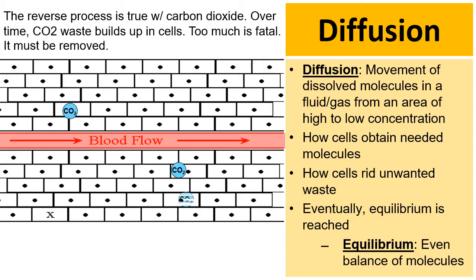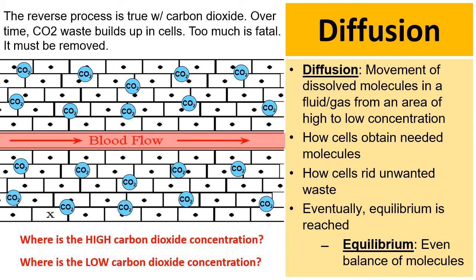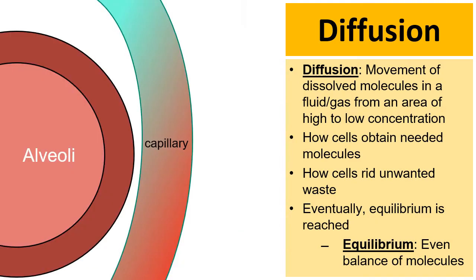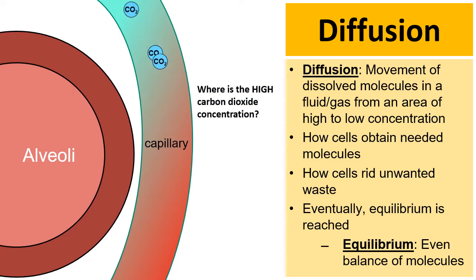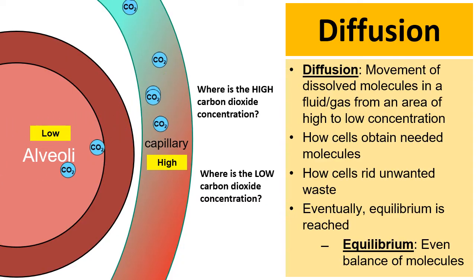The reverse process is true with carbon dioxide. Over time, cells generate carbon dioxide waste, and too much can become fatal — so it has to be removed. The high CO2 concentration is in the cells; the low concentration is in the bloodstream. So carbon dioxide diffuses into the bloodstream, and your heart continually pumps this blood back to the lungs. The CO2 returns to the alveoli — the high concentration is in the capillaries, the low is in the alveoli — so diffusion moves the CO2 into the alveoli to be exhaled.